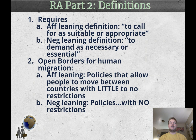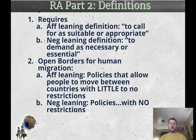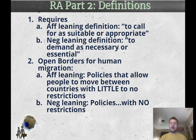The second key definition is 'open borders for human migration.' People hear open borders and think that means absolutely nothing — that borders just cease to exist — but there's a big difference between no borders and open borders. An affirmative definition would say policies that allow people to move between countries with little to no restrictions. The negative wants to say open borders means policies with no restrictions whatsoever, but that definition does not exist anywhere in the world. If the negative wins their definition, it will be much more difficult for the affirmative to win the debate.